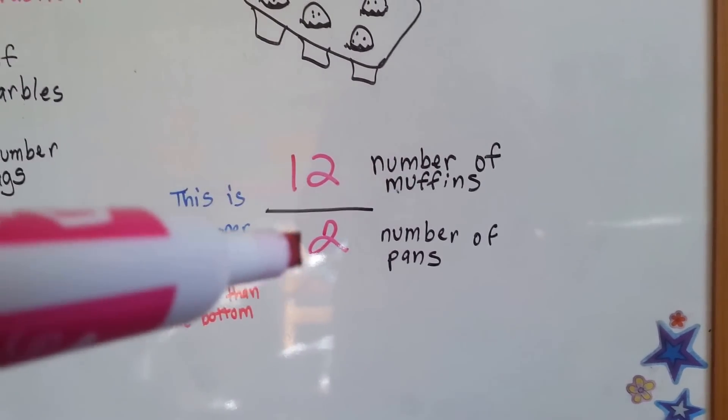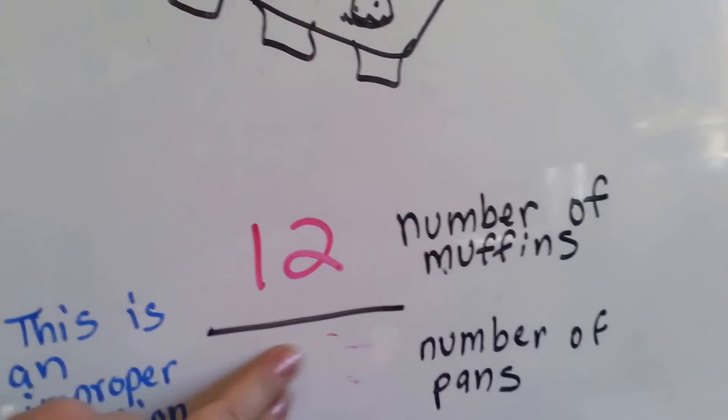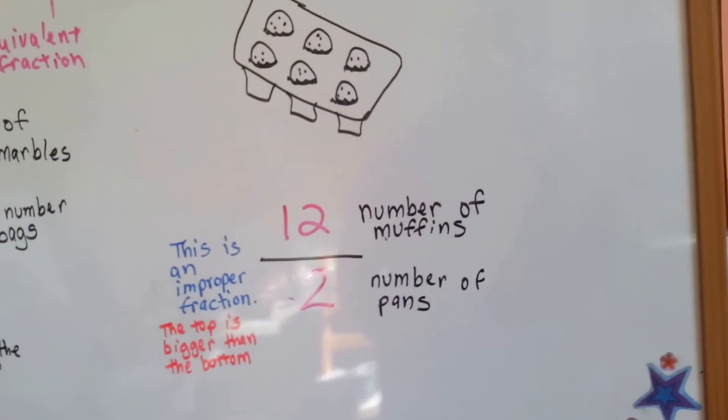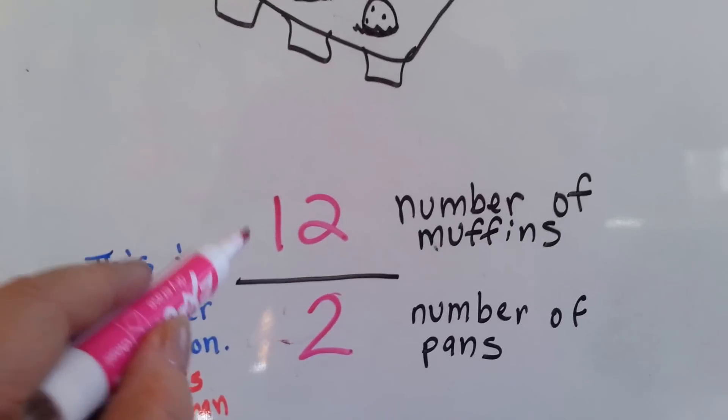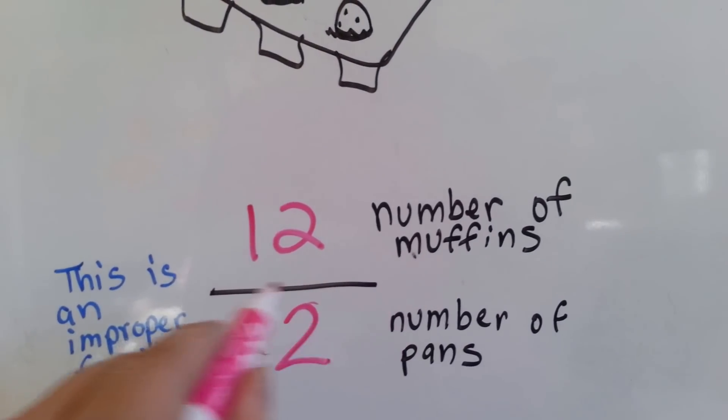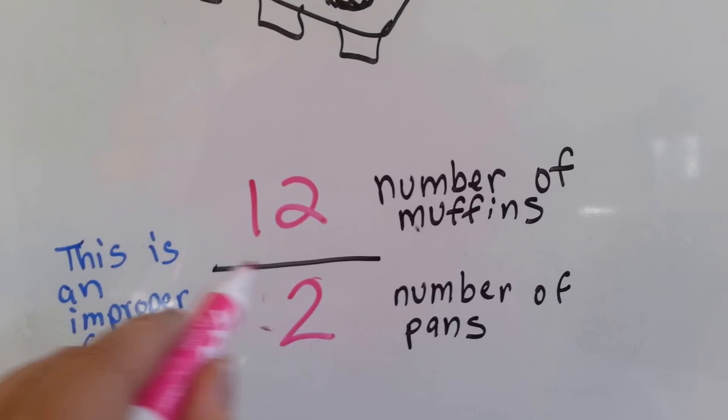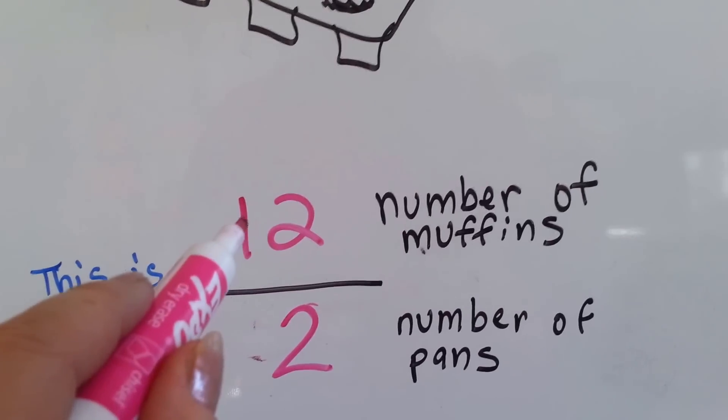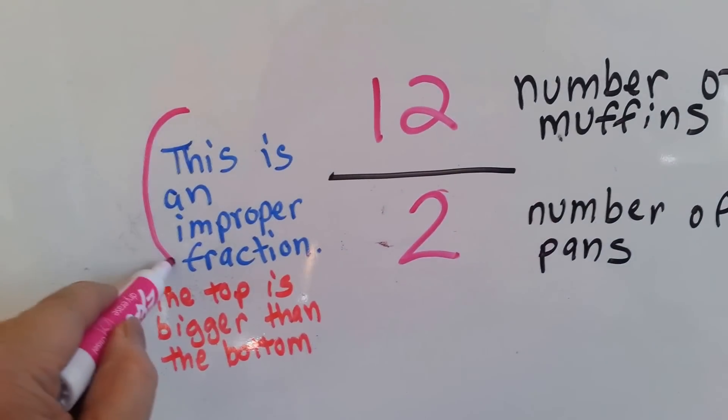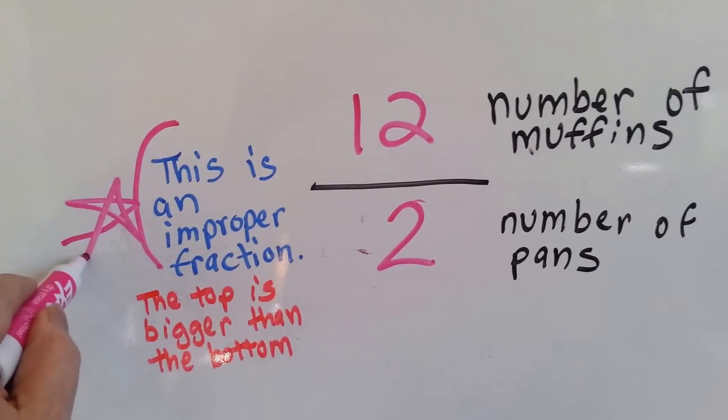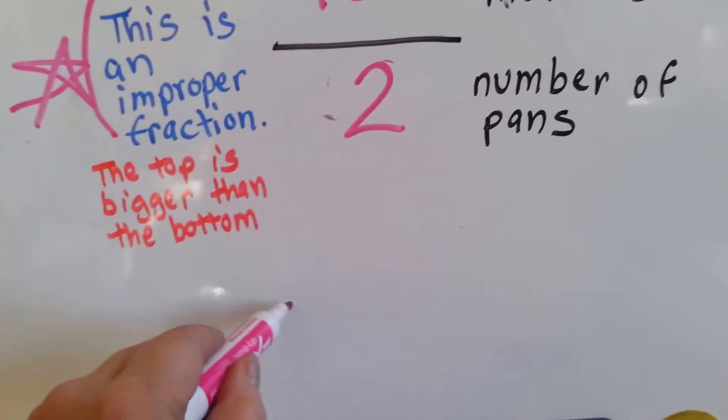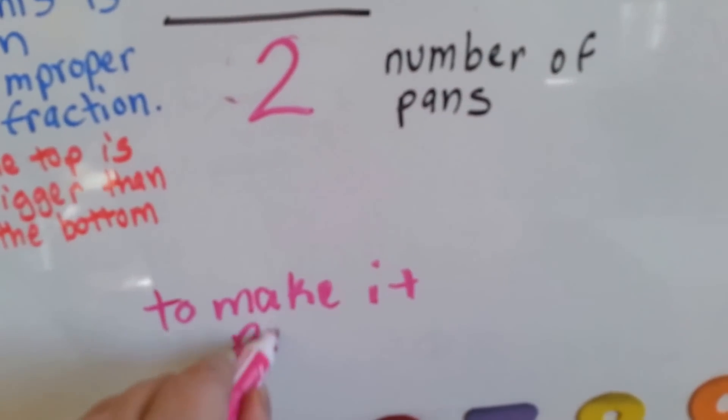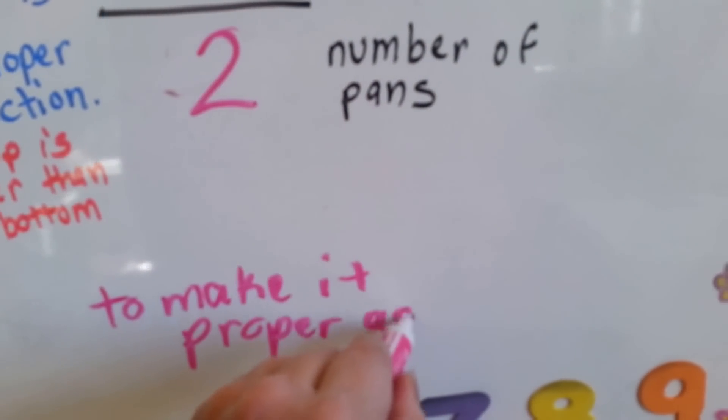So this is an improper fraction like we talked about in our last video. The top, the numerator, is bigger than the bottom, the denominator. There's twelve muffins in two pans. Now, I've told you before that the line coming down the middle is called the dividing line. That's the numerator, that's the denominator, and this is the dividing line. So, we're going to ask ourselves how many times two can fit into the twelve. You only do this with an improper fraction. It's the only time you do this because you want to make the fraction proper again.